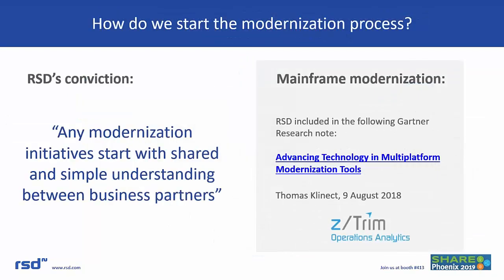Starting any modernization initiative takes action. Modernization and implementation of digital business requires a partnership between all stakeholders. Sharing meaningful, understandable data is most important. In a research note on modernization initiatives by Gartner's Thomas Klinak, two important points were made: pursue application rationalization to align the application portfolio with business processes and strategies, and focus on tools that provide meaningful communication to all stakeholders — particularly IT and business units — as modernization initiatives begin. The research note included a recommendation for ZTRIM by Thomas Klinak as the tool to enable organizations to take these specific actions.